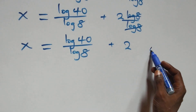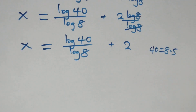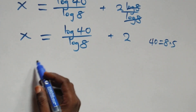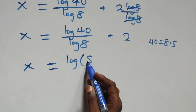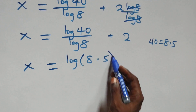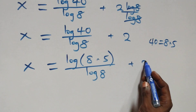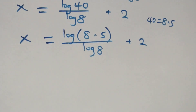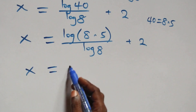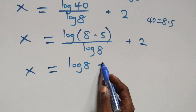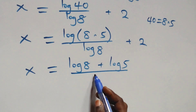Next, since 40 equals 8 times 5, we have x equals log of 8 times 5 over log 8 plus 2. Finally, this becomes x equals log 8 times 5 over log 8 plus 2, which we can separate into two fractions.